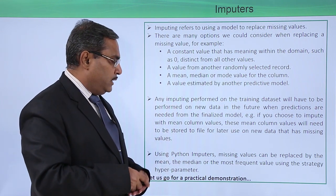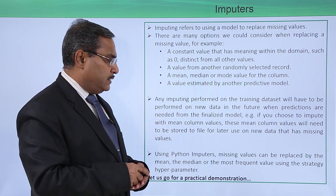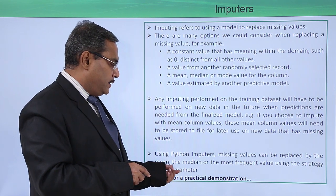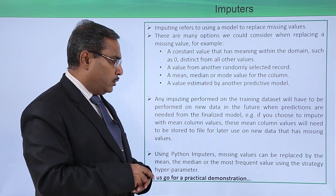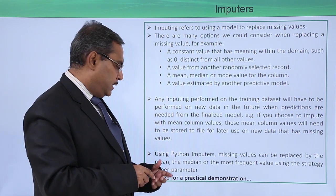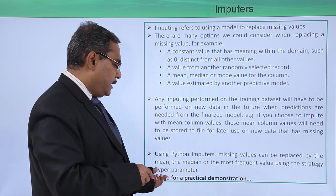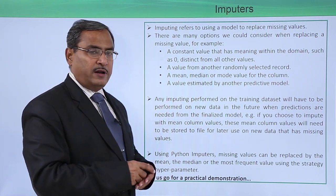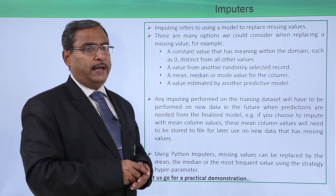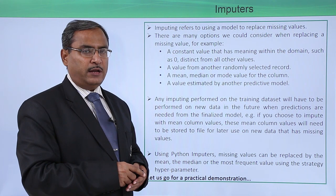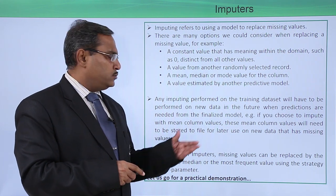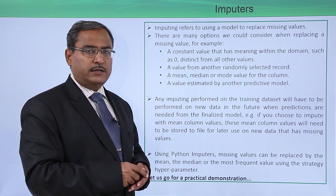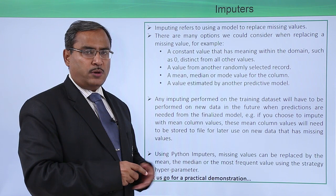Using Python imputers, missing values can be replaced by the mean, the median, or the most frequent value using the strategy hyperparameter. There are multiple different ways to deal with missing values. Let us go through one practical example for better understanding of this topic.